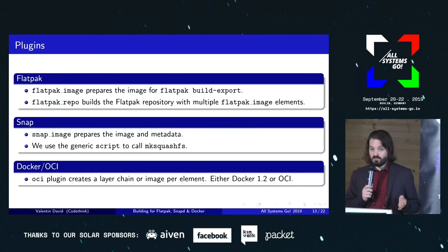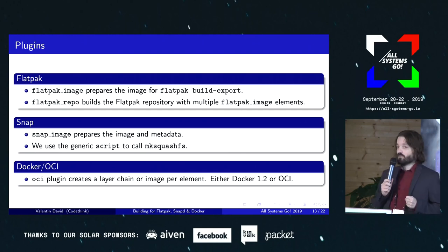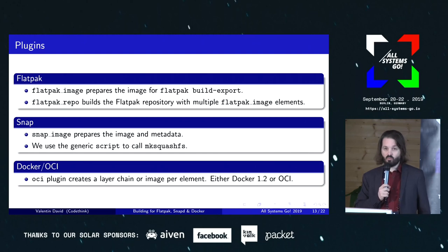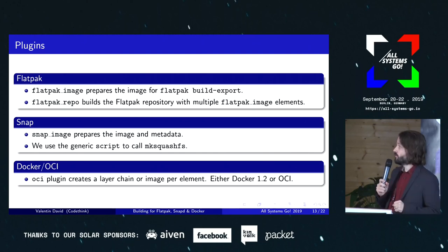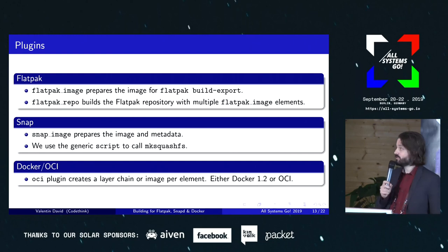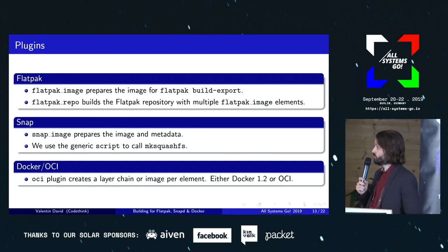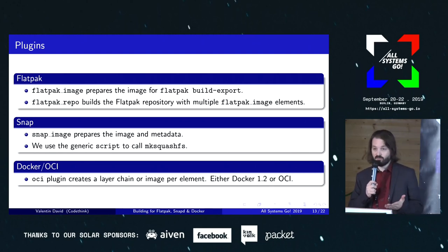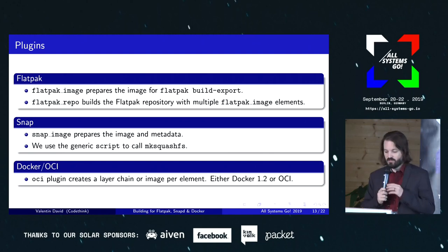For FreeDesktop SDK we need three different outputs, and we made some plugins for each. Each output has one element using one of these plugins, which mainly has a dependency on what we want to put in that image, plus metadata for that image. The metadata differs between Flatpak, Snap, and Docker — for example, there are no exposed ports in Flatpak, but there are in Docker.